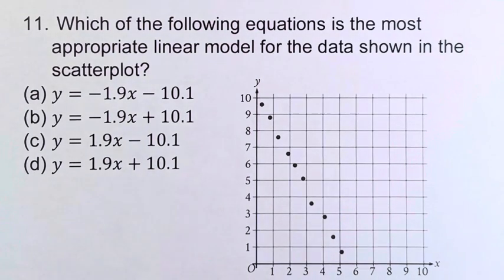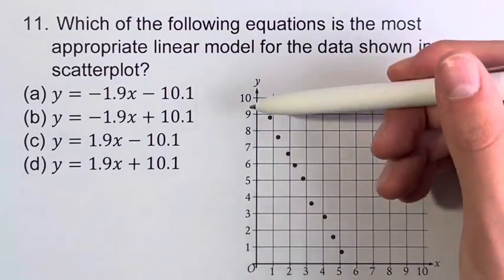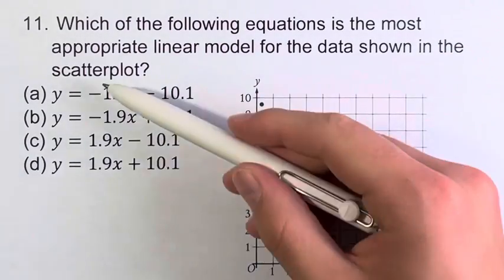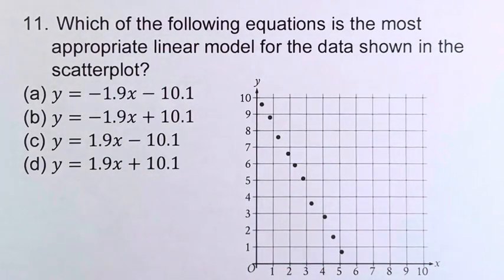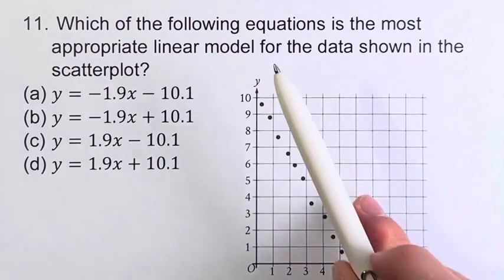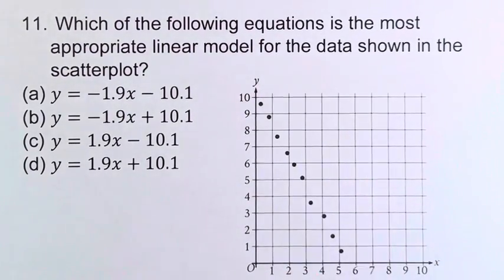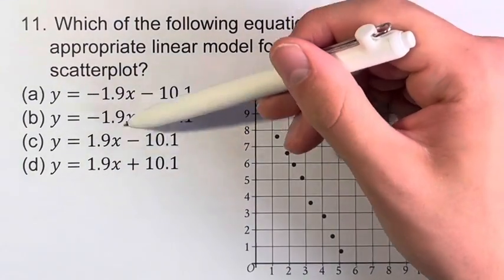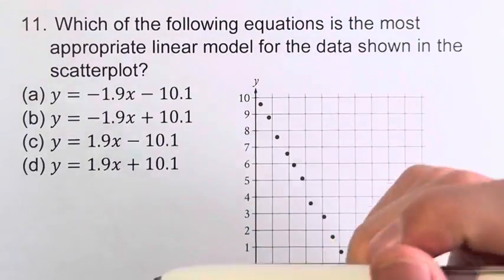So there's a couple ways you could go about solving this problem. You could plug some points in and see which of these equations lines up the closest with the values of those points. You could take two of these points, create the equation of the line between them, and see which of these is closest. But the easiest way is to look at these equations and notice something.